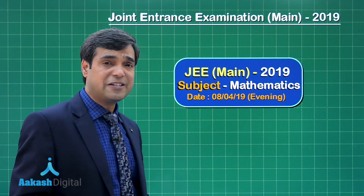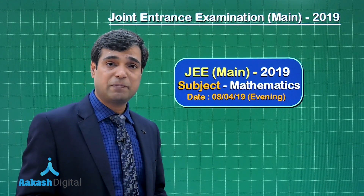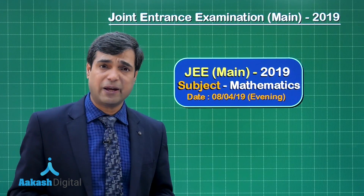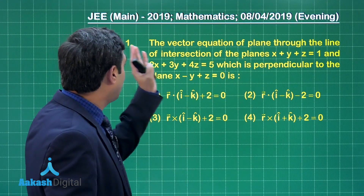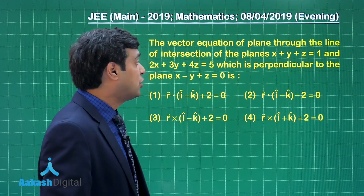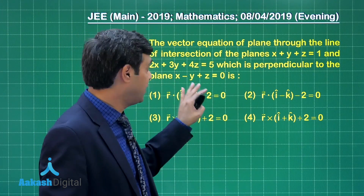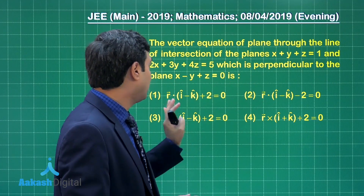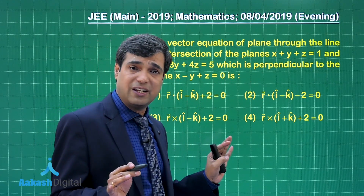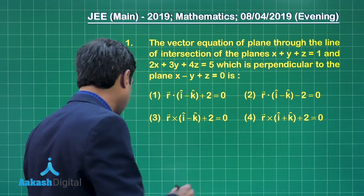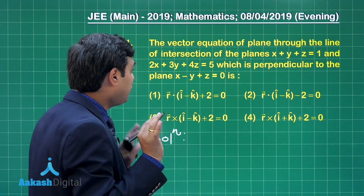Hello everyone, let's take up the 8th April 2019 Mathematics paper of the evening shift. Let's begin with the first question of JEE Main. This paper's first question is the vector equation of a plane through the line of intersection of two given planes, which is perpendicular to another plane — a simple question from 3D geometry.